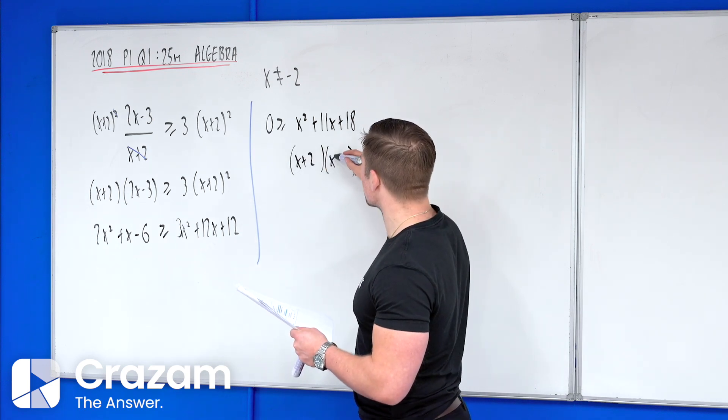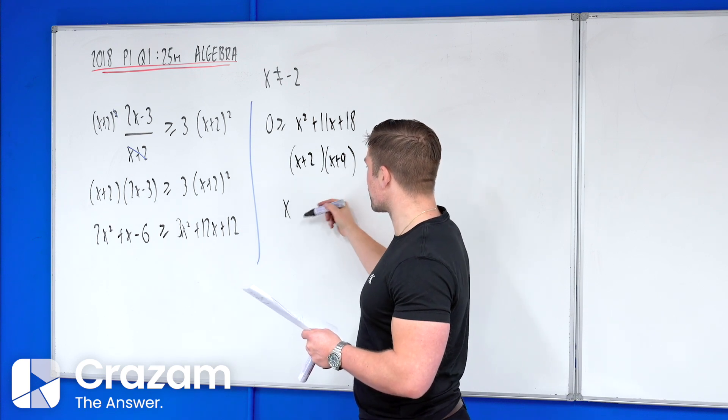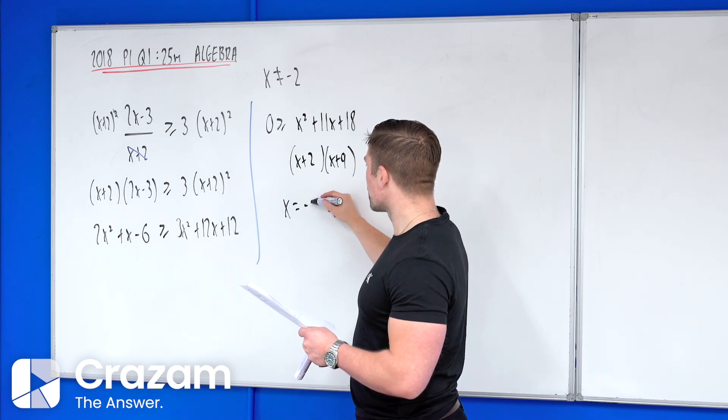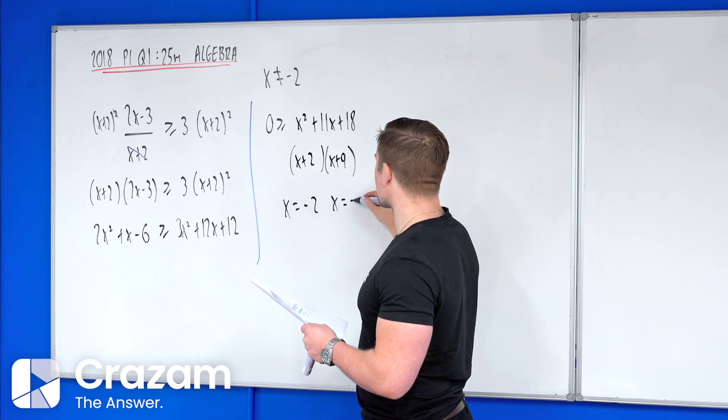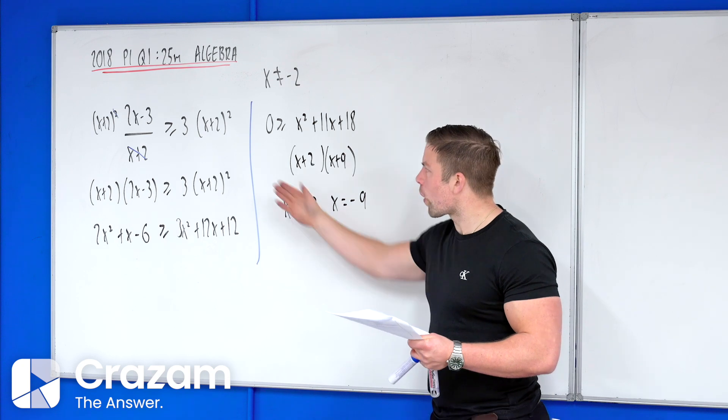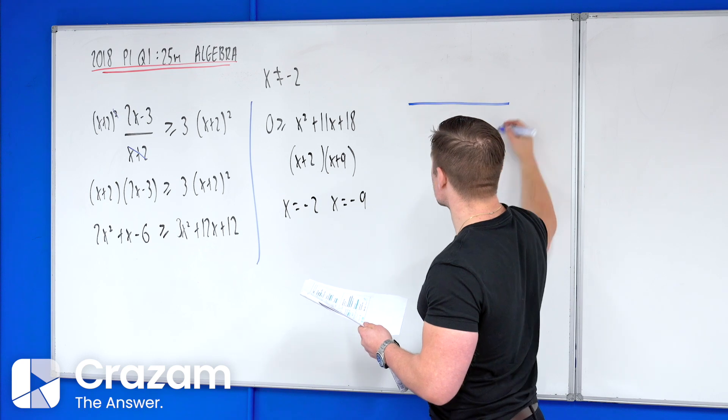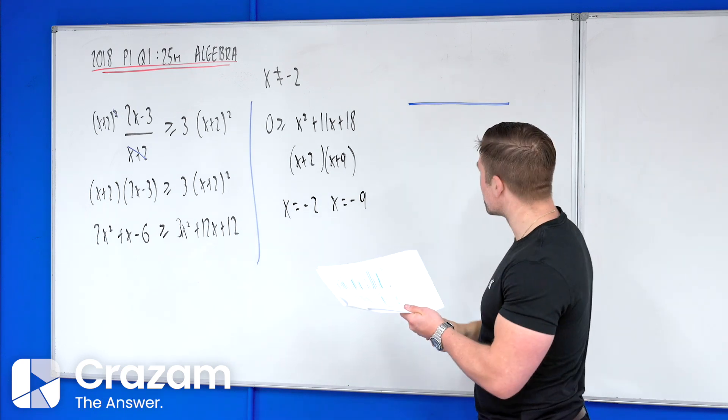If you put your factors equal to 0 you get your roots, and the roots in this case are considered critical values. So we have the two places where this quadratic crosses the x-axis. We have to come up with a finish to this here to put it back into an inequality.